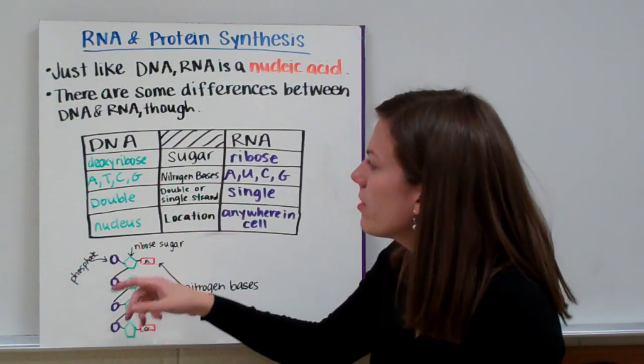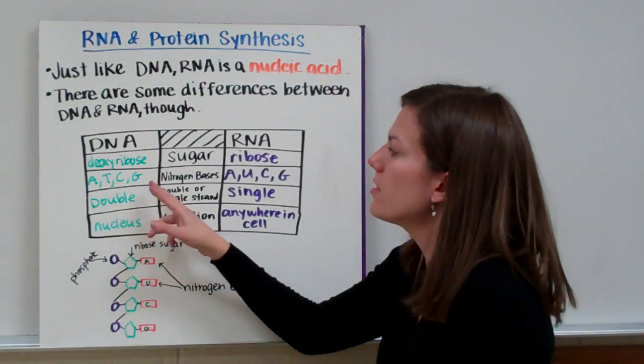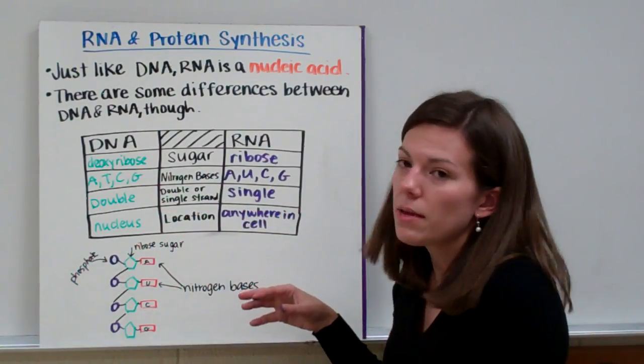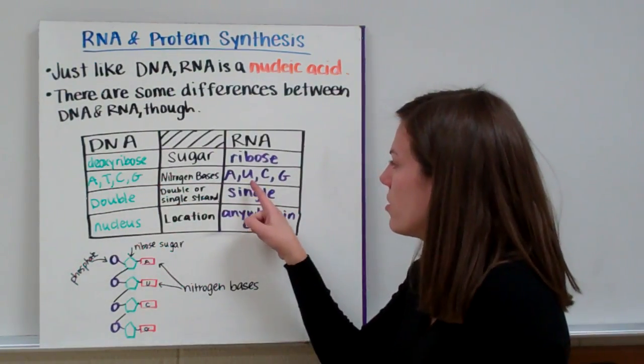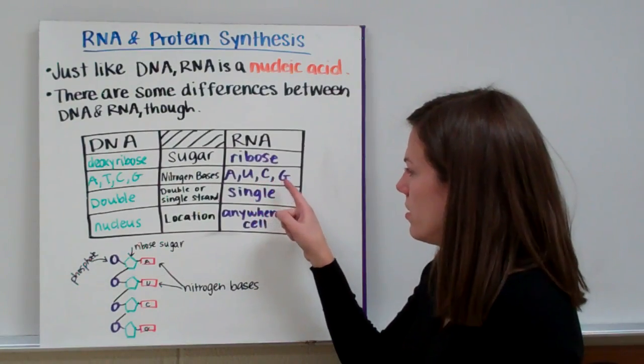Their nitrogen bases also differ. DNA has A's, T's, C's and G's. RNA has some of the same bases, but instead of a T, it has a U. So it has A's, U's, C's and G's.